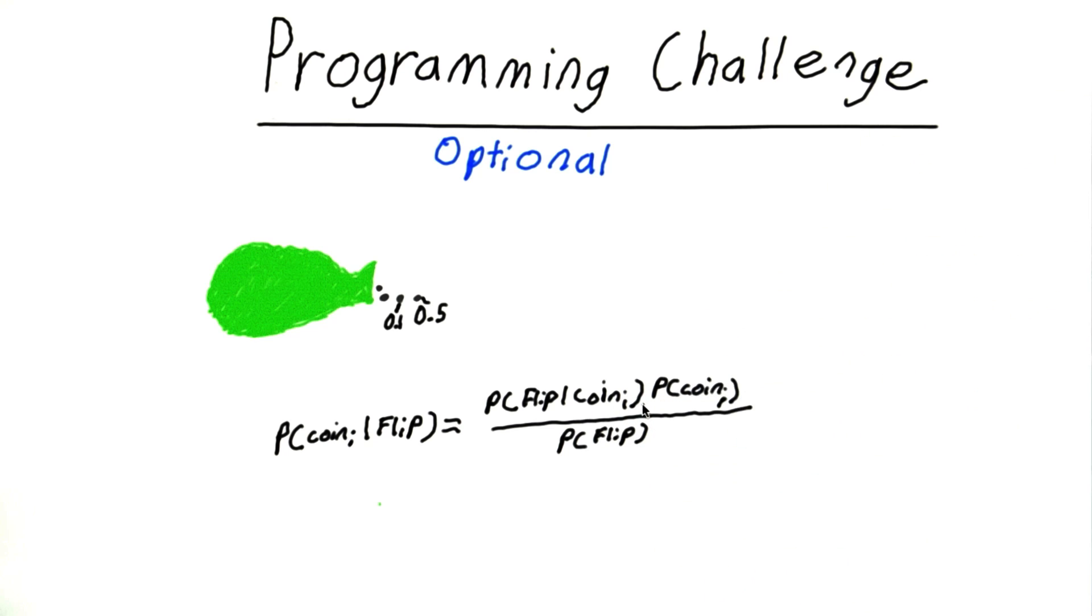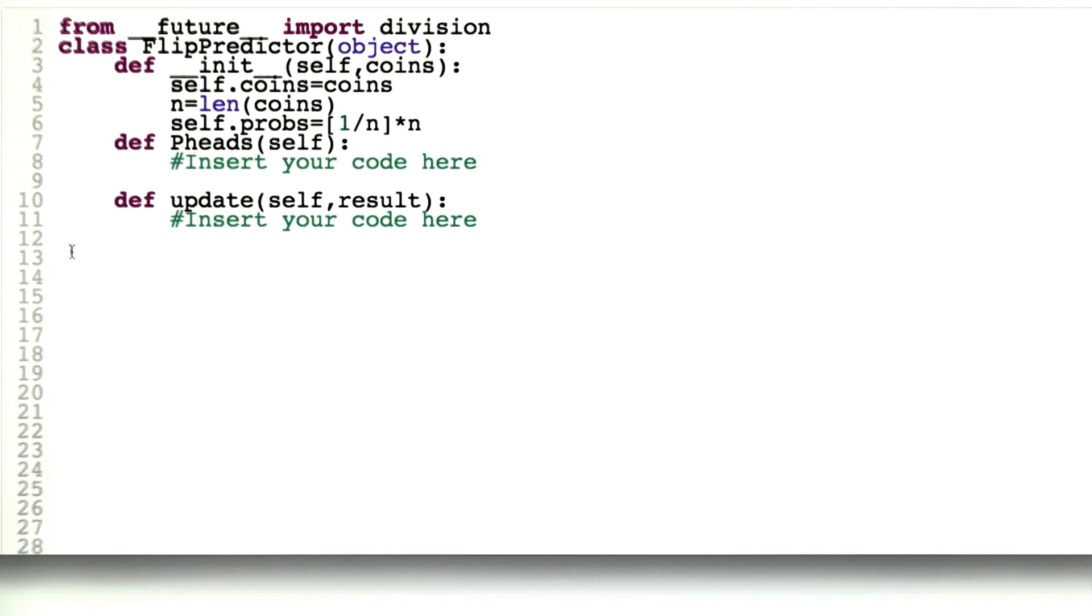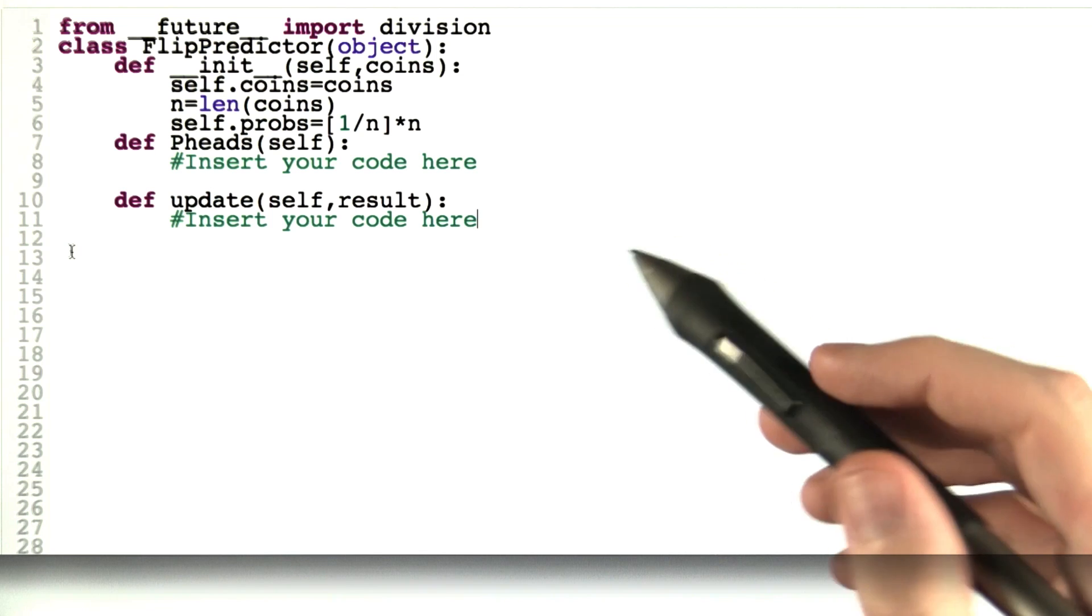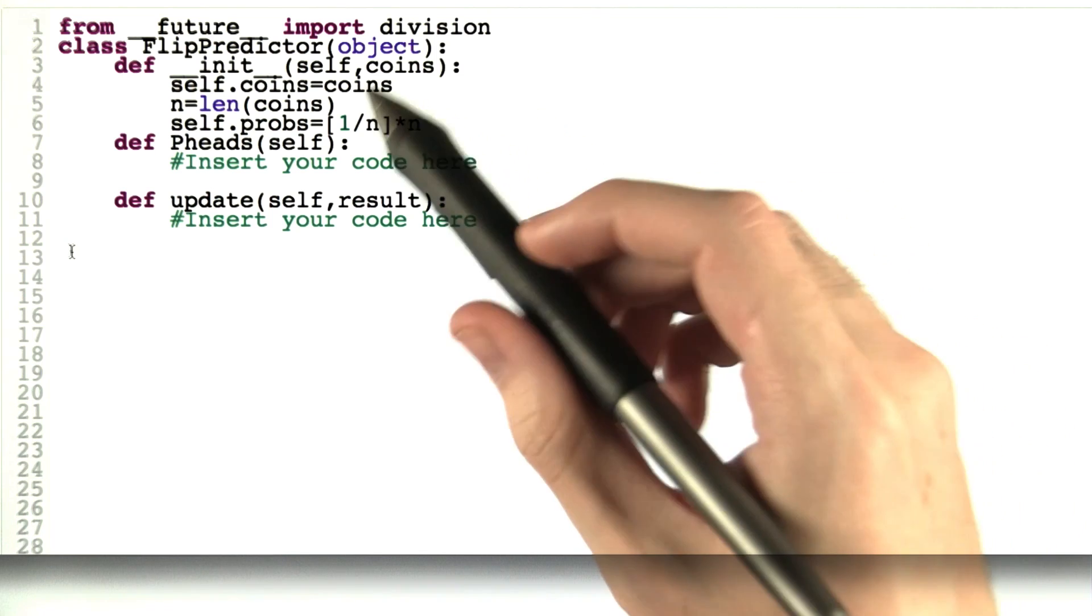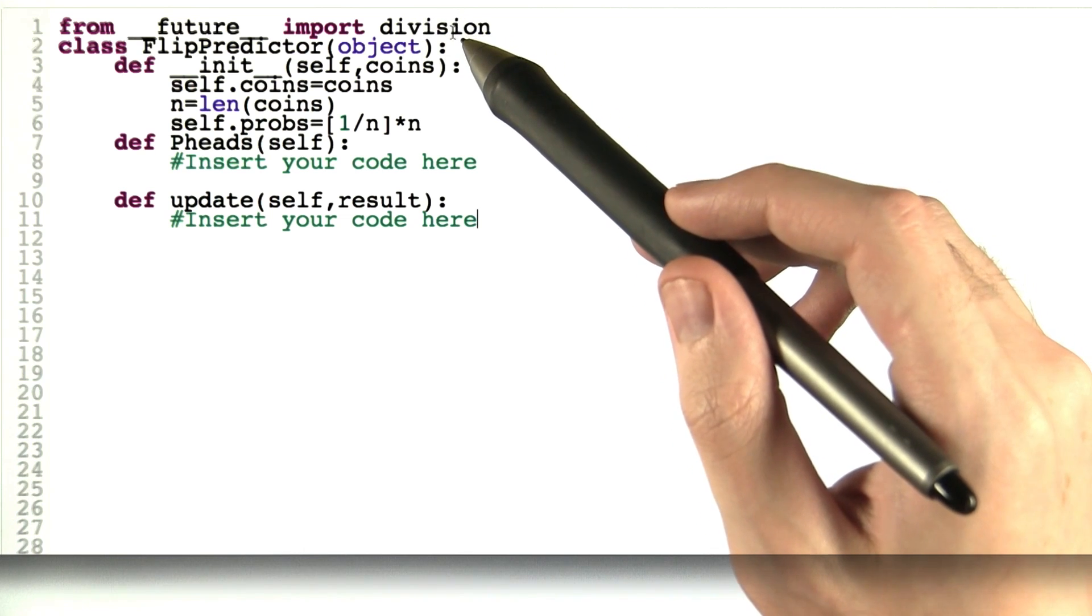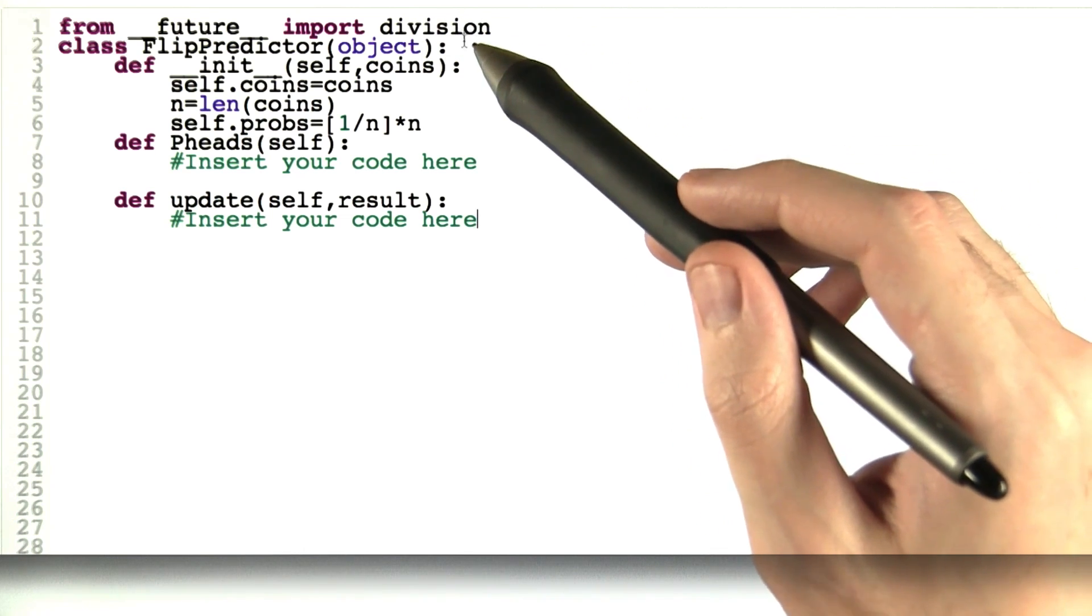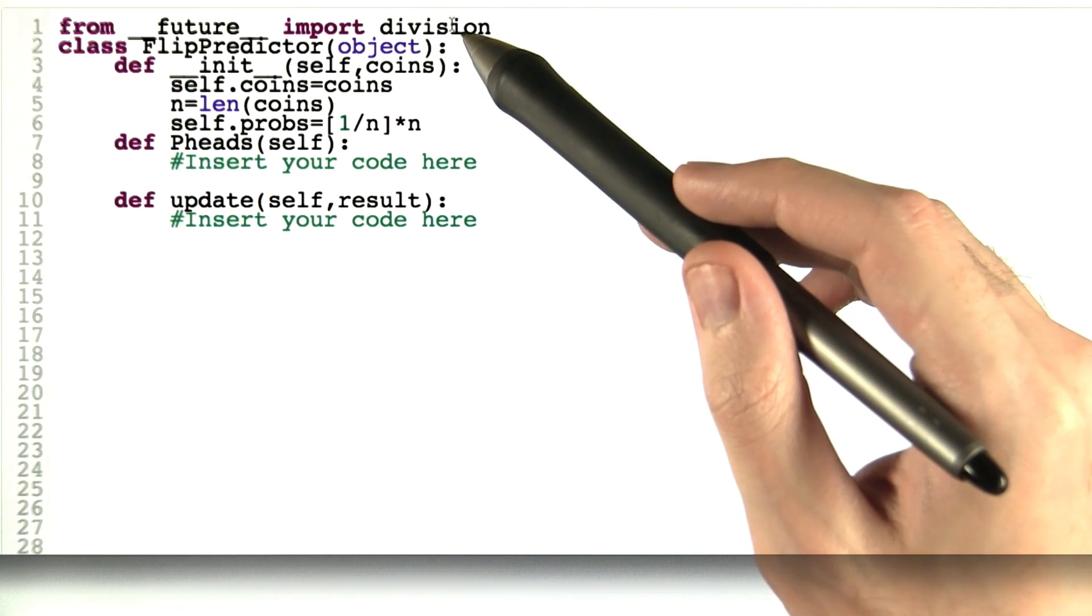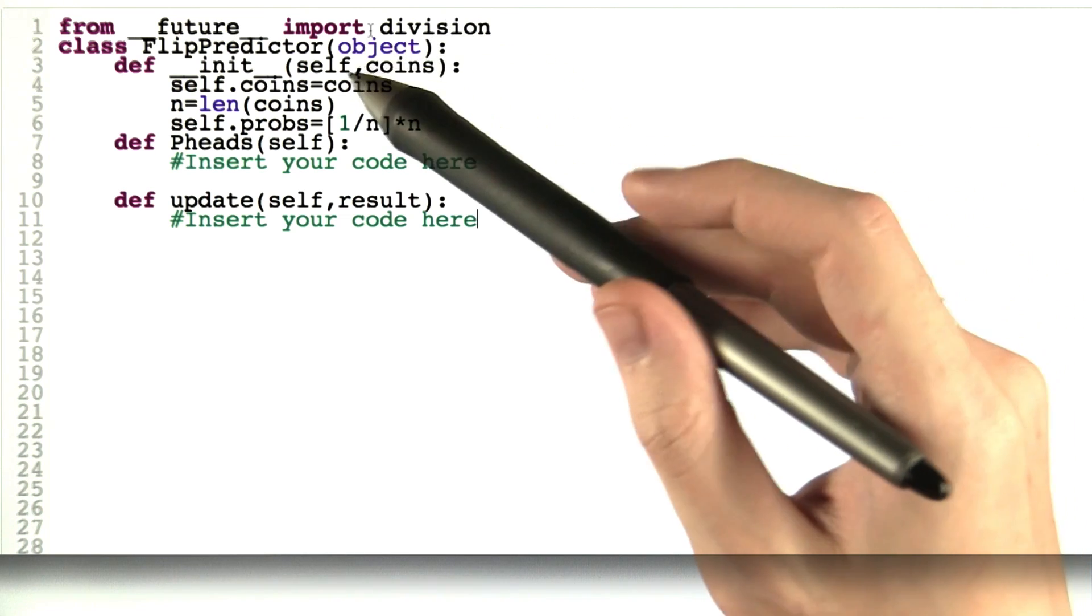So now let's look at the code you're going to have to write. So here we are back in our editor with an outline of the program you're going to have to write. First, we just make division work the way you'd expect it to work. That is, 1 divided by 2 equals 0.5, so you don't have to think about it.